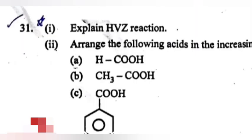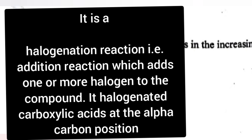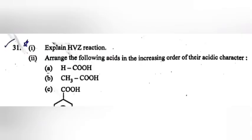Question 31, Part 1: Explain HVZ reaction. Answer: It is a halogenation reaction, i.e., an addition reaction which adds one or more halogens to the compound. It halogenates carboxylic acid at the alpha carbon position. Part 2: Arrange the following acids in the increasing order of their acidic character. Answer: A greater than C greater than B.